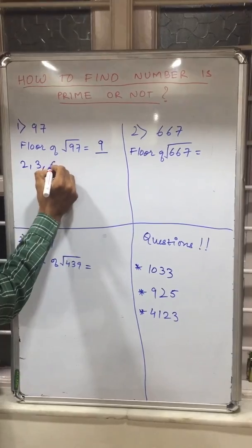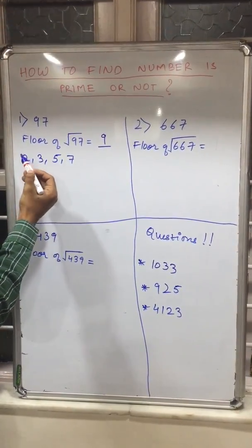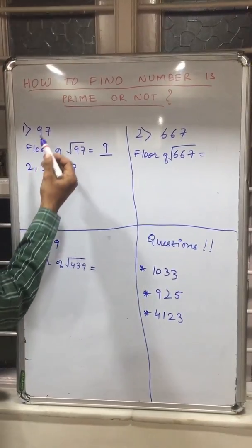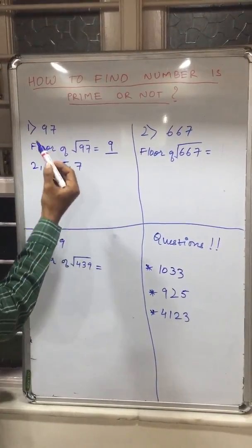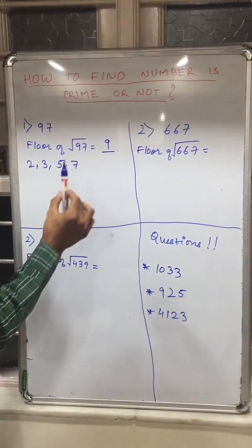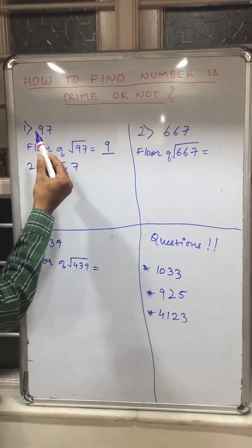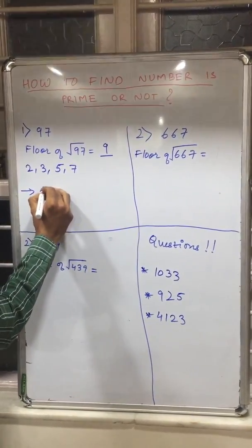3, 5, and 7. Now one by one divide 97 by 2, 97 by 3, 97 by 5, and 97 by 7. So if it gets divided then it is a non-prime number. So I hope it is not divided, therefore 97 is a prime number.